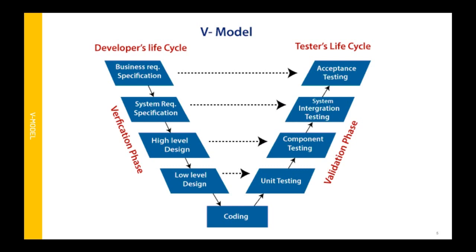Now let's look at the V model architecture. It has both the developer lifecycle and the tester lifecycle. The phases covered in the developer lifecycle are the verification phases — this is what we review. The phases covered in the tester lifecycle are the validation phases. The dotted lines in the diagram show the association between each phase of the developer lifecycle and the tester lifecycle.